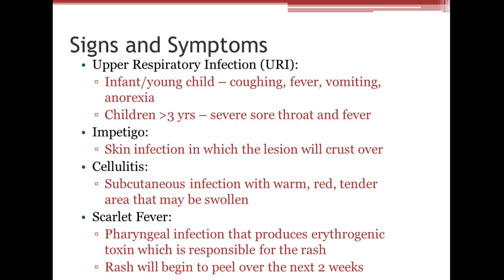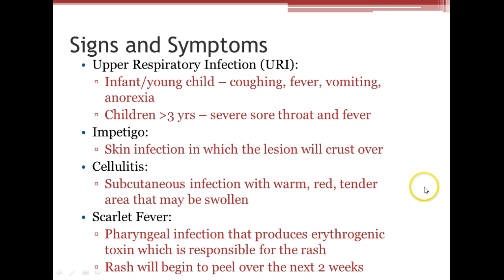Some children can develop a hoarse-sounding voice with strep. Impetigo is a type of skin infection where the lesion will crust over. You can also get cellulitis — a subcutaneous infection presenting with a warm, red, tender, swollen area. Or scarlet fever, which is a pharyngeal infection that produces erythrogenic toxin, responsible for the rash. The rash will begin to peel over the next two weeks.